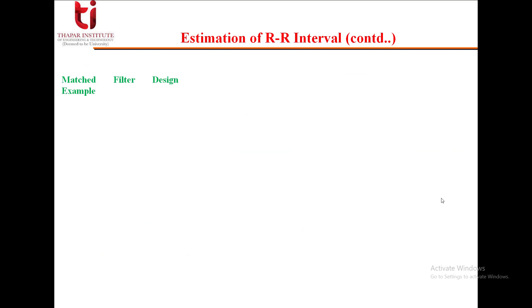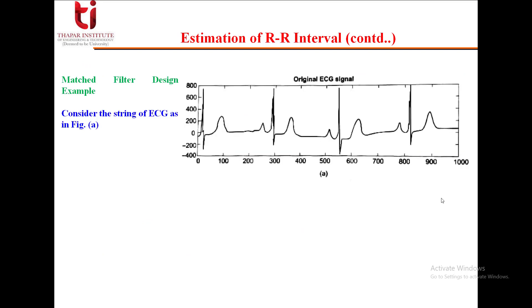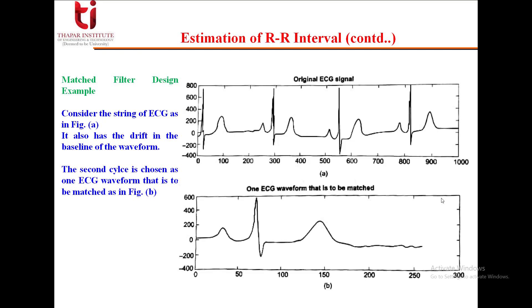We'll see one example for this matched filter design considering an ECG signal. We have considered one original ECG signal; it has drift in the baseline of the waveform, as you can see it is not exactly starting from zero. The second cycle is chosen as one ECG waveform that is to be matched. This one ECG waveform we have taken, mainly the second cycle, which we want to be matched.